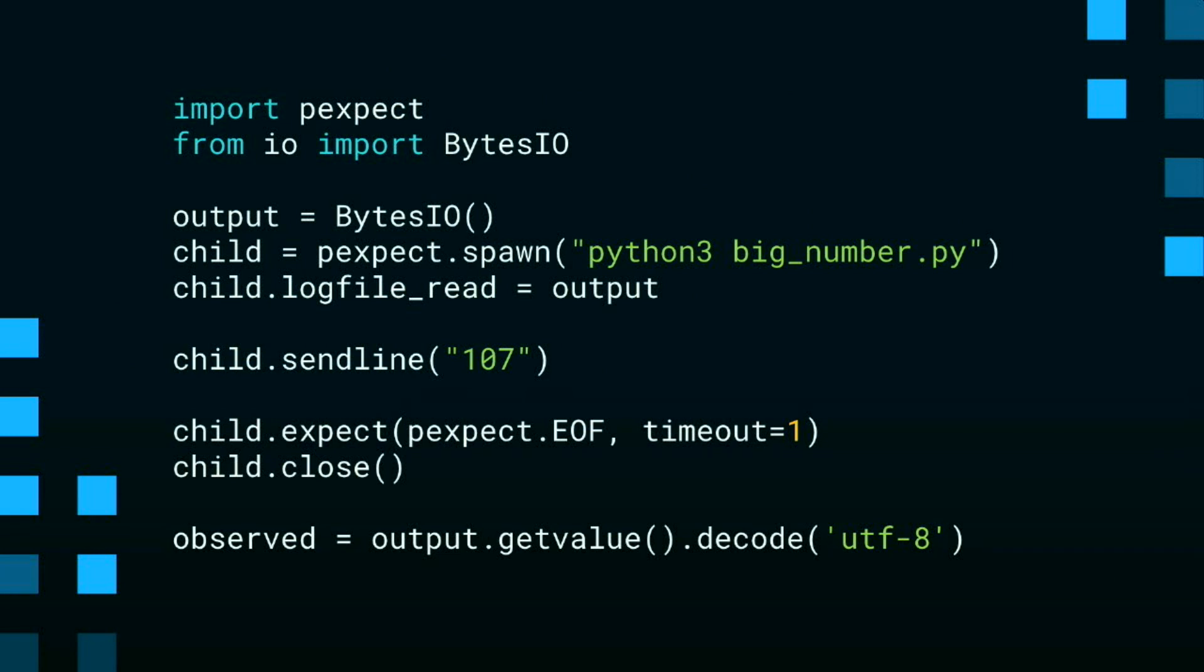Here's an example of how you might use p-expect. You just need to import it, and then the next block of code there is to spawn your student's code, like that big number Python file in a sub process, a child process, set up the logging so that you can collect the output of that program as it's running, and then send line, you can send input to that program. Then you can expect, so child.expect, the p-expect EOF, end of file, just means that you're going to wait until that program ends. In this case, it's very simple. That big number exercise only requires us to send one line of text in and then just wait for the program to end. Afterwards, you can collect the output, it's in byte format, and then you can decode it into something sensible.